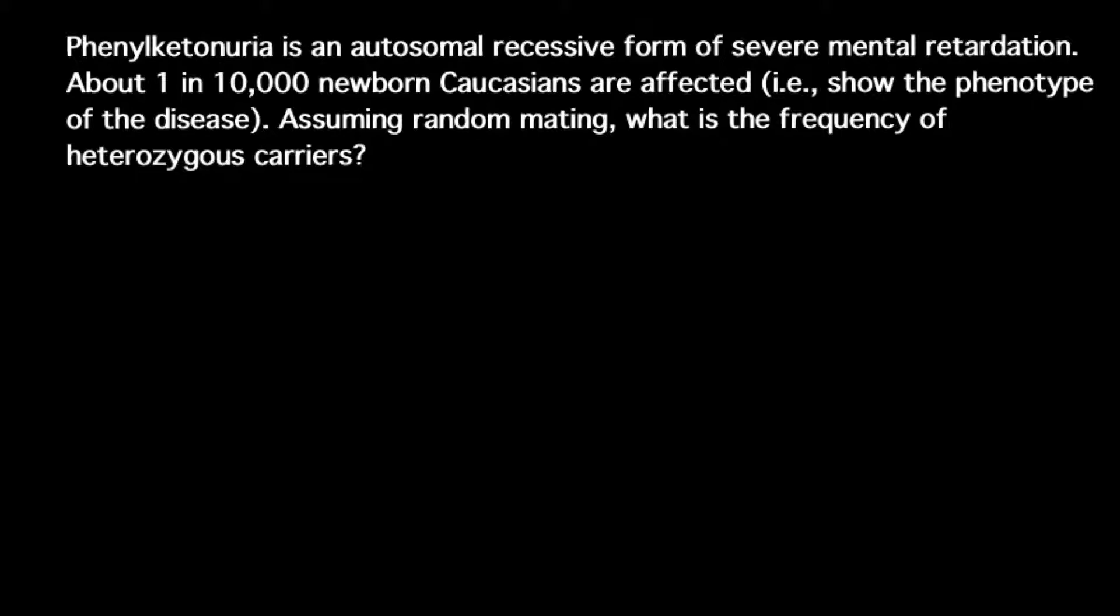Phenylketonuria is an autosomal recessive form of severe mental retardation. About 1 in 10,000 newborn Caucasians are affected or show the phenotype of the disease, assuming random mating what is the frequency of the heterozygous carriers.